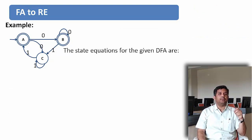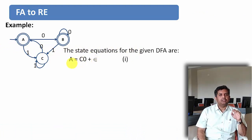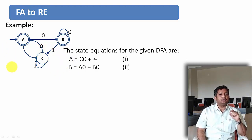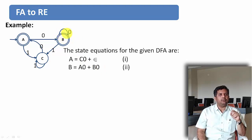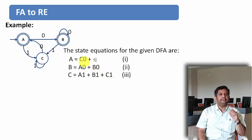For better understanding, let us do one more problem. Let us first find the state equations for the given DFA. Equation 1: A equal to C·0 plus epsilon — I can reach state A from state C with a 0 transition, and A is the start state. Equation 2: B equal to A·0 plus B·0 — I can reach state B from state A on 0, or from B on 0. Equation 3: C equal to A·1 plus B·1 plus C·1 — I can reach state C from state A, state B, or state C each with a 1 transition.